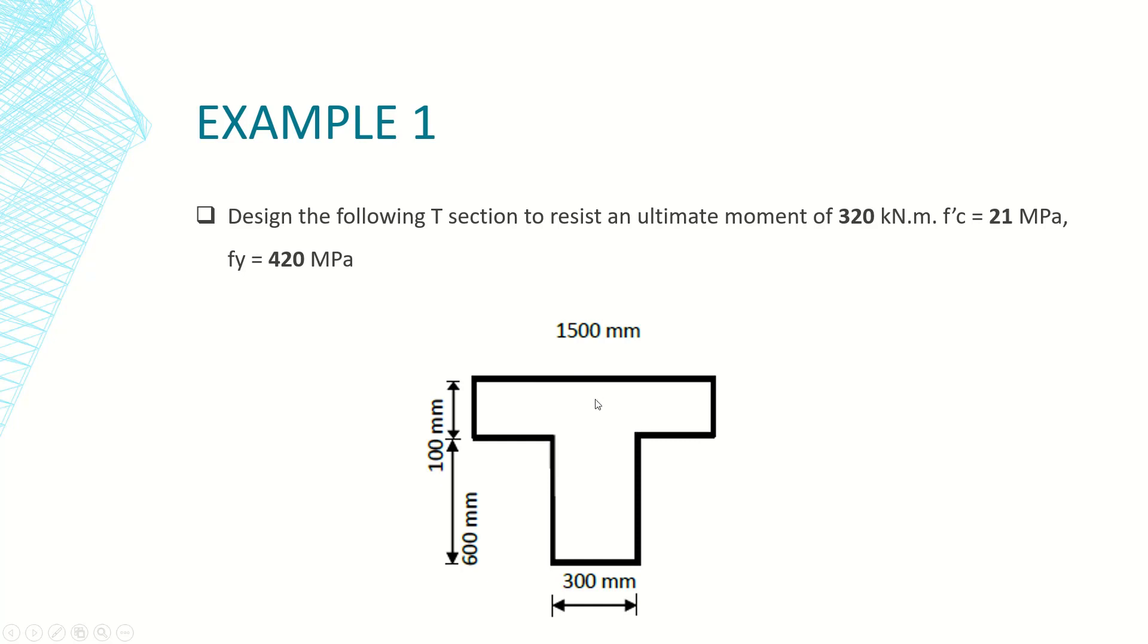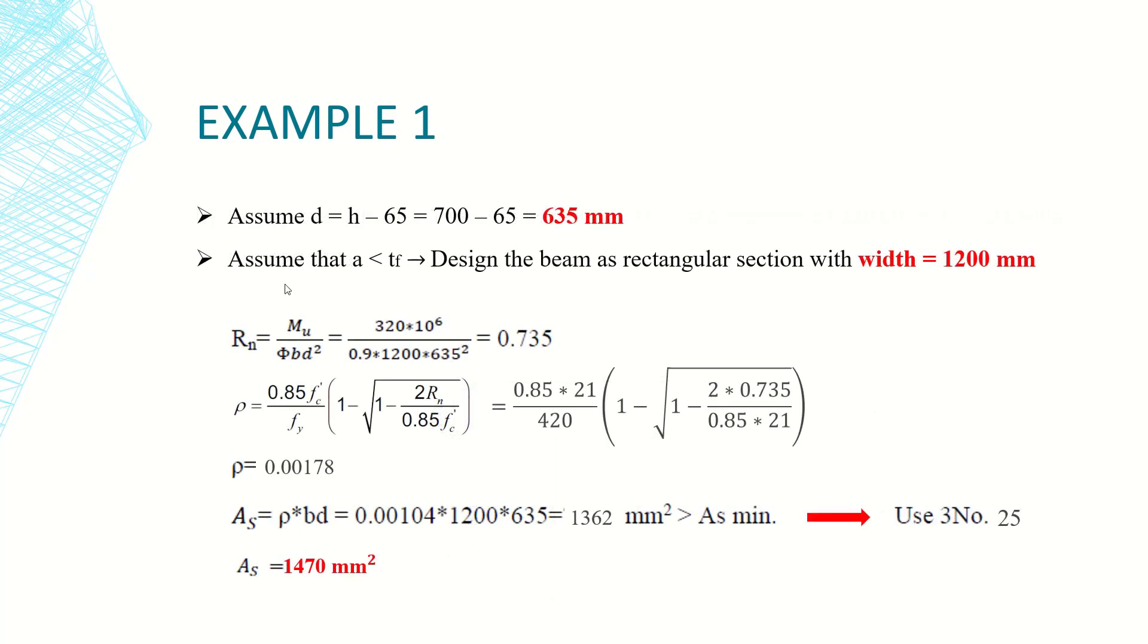However if the neutral axis is passing through the web here, I have to divide this zone into two areas and there is a different procedure. Usually most of the T sections, since the depth is high somehow...